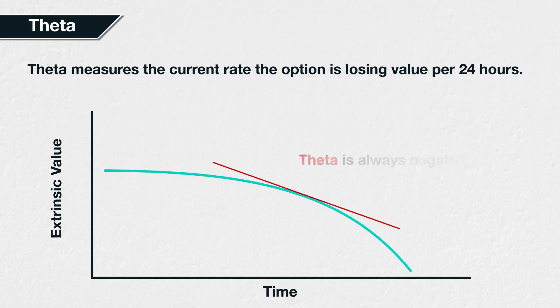Theta is always negative for option buyers, meaning their option will lose value as time passes. All other things being equal, an option will lose extrinsic value as time passes, until eventually, at the moment of expiration, all the extrinsic value is gone. The rate at which it loses value is non-linear, as we will see later in this section.